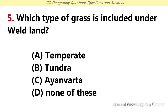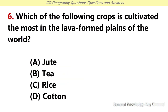Which type of grass is included under wetland? Answer A: Temperate. Which of the following crops is cultivated the most in the lava-formed plains of the world? Answer D: Cotton.